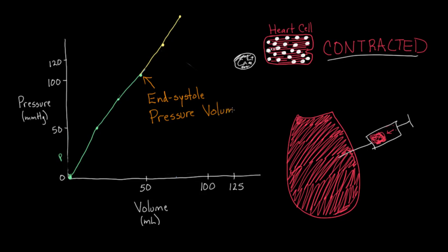This is called the end-systolic pressure-volume relationship. People shorten this to ESPVR — End-Systolic Pressure-Volume Relationship. All it means is that if you could get a situation where your heart cells are completely contracted and you either add or remove volume, this line tells you what the pressure would do — how it would change.